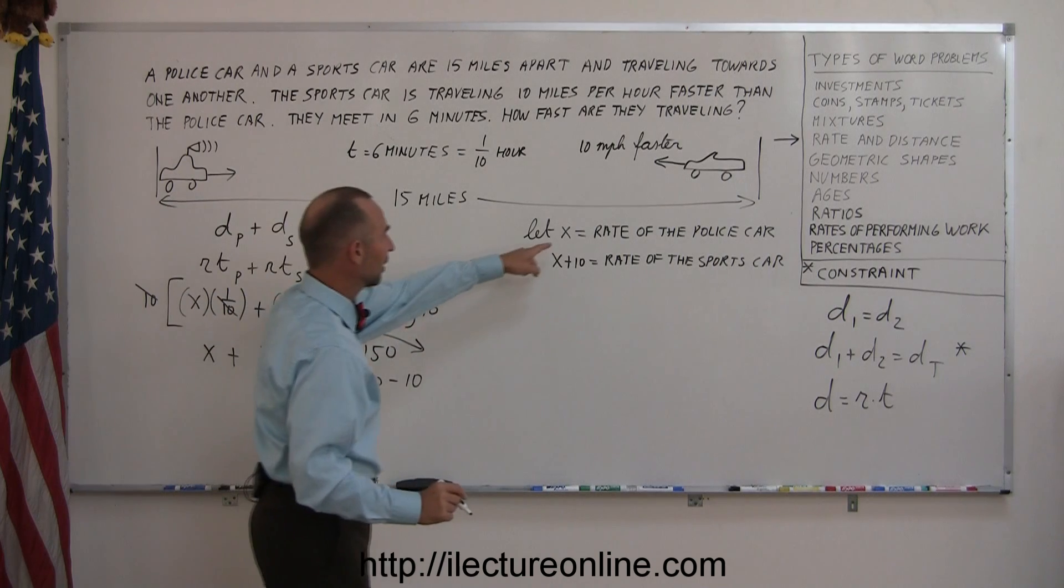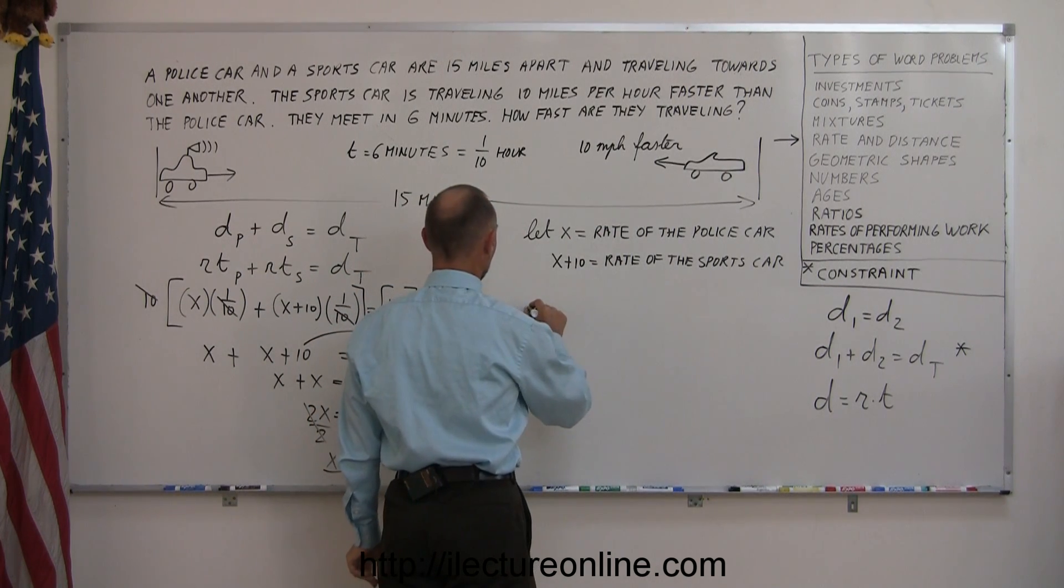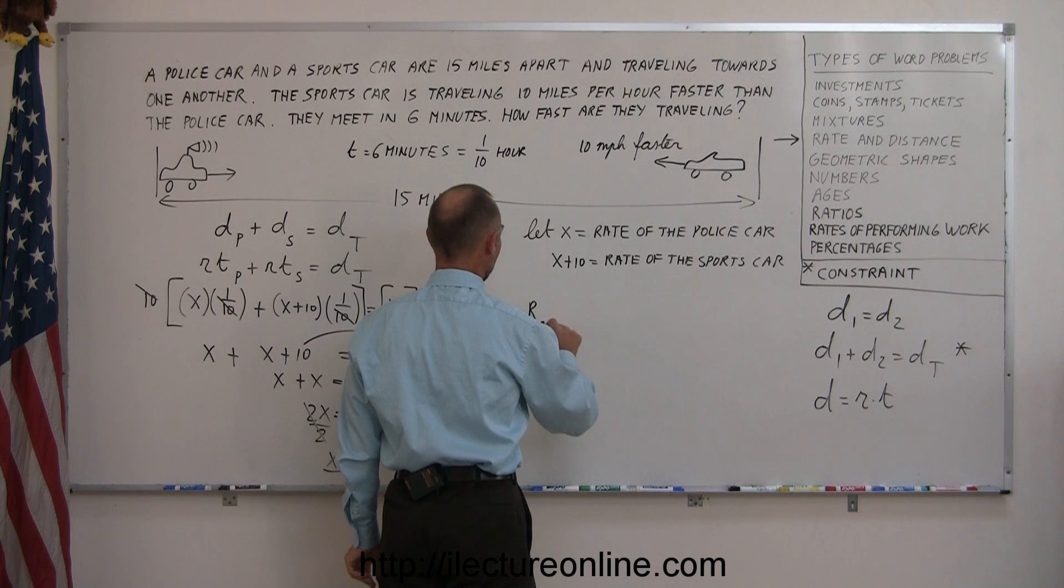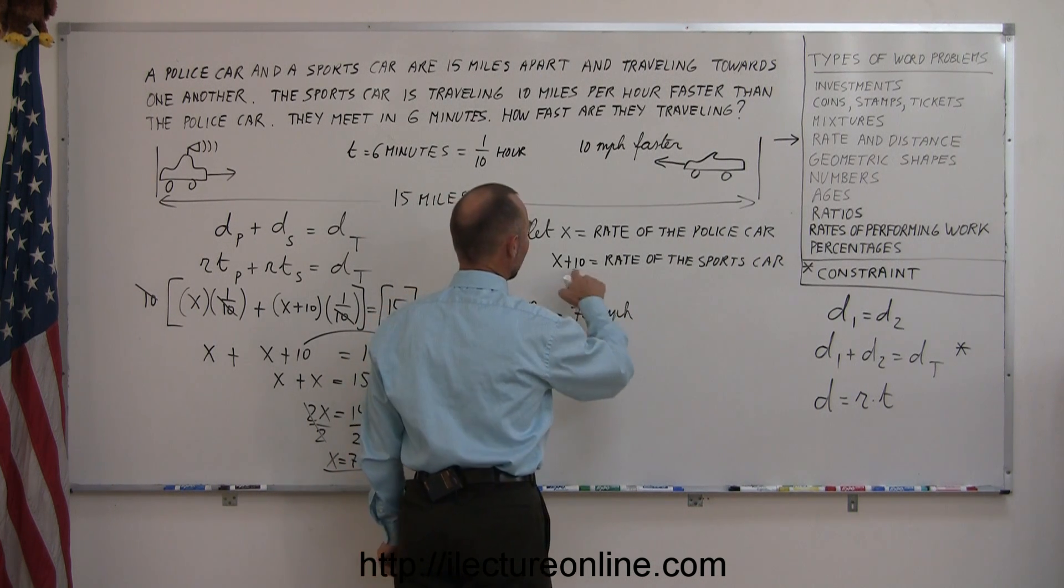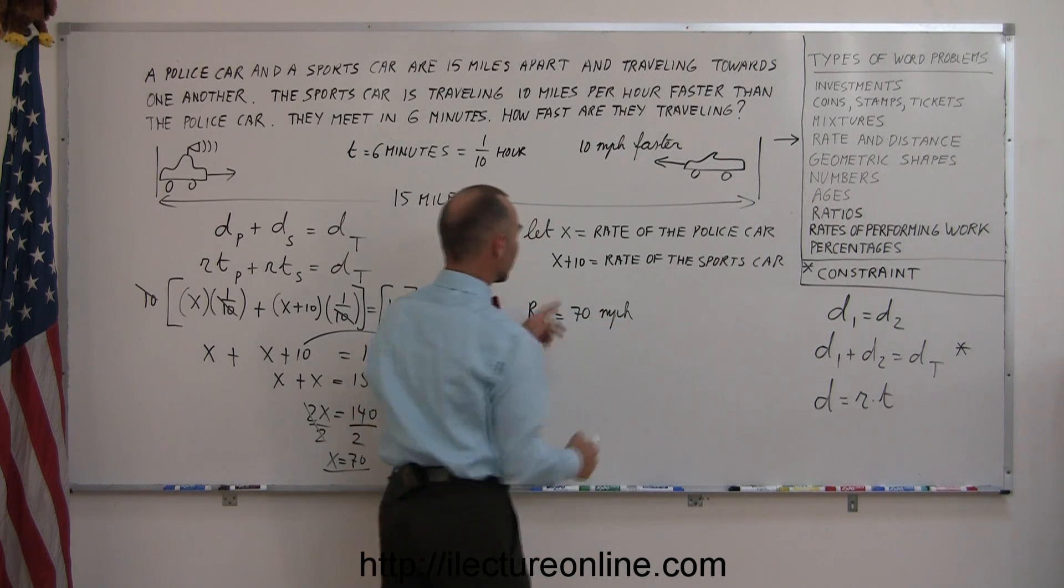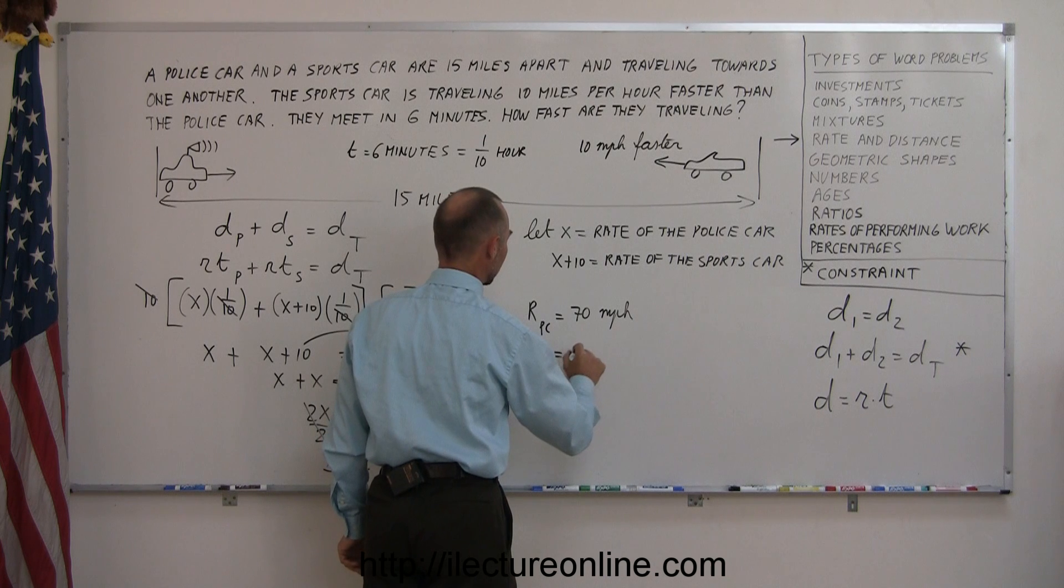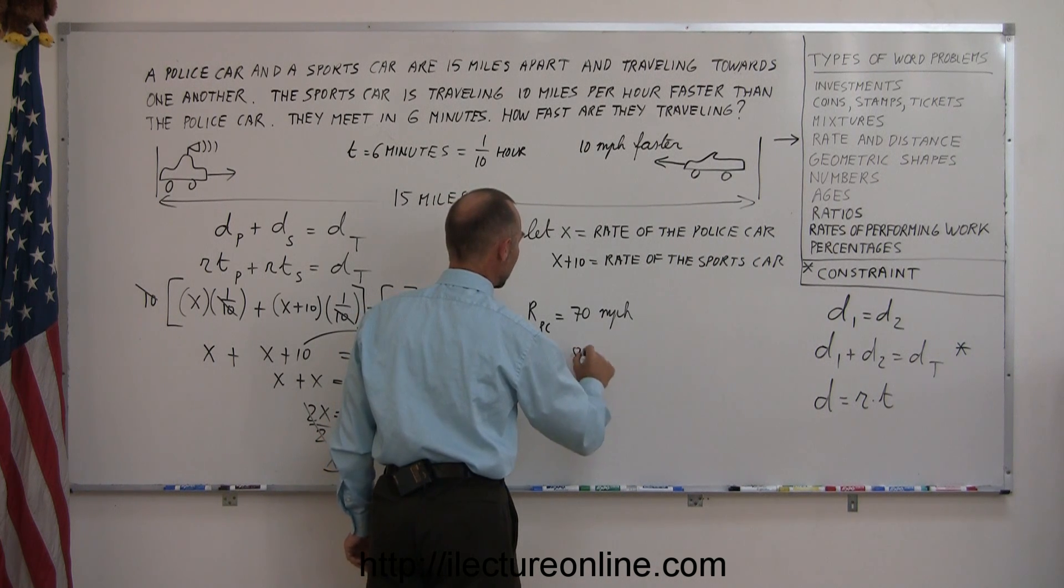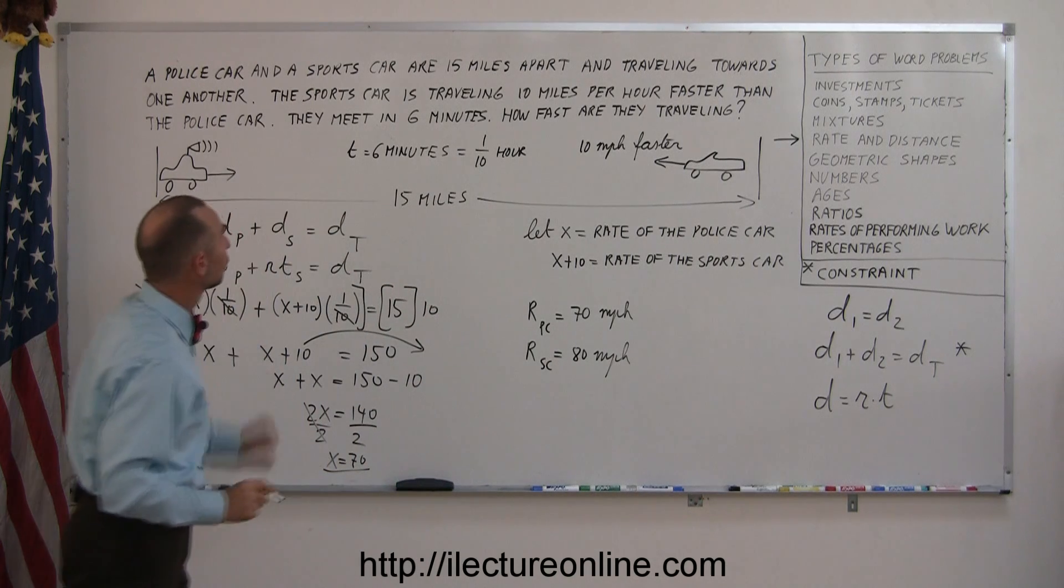Going back to what X represented, since X represented the rate of the police car, that means the police car, the rate of the police car, is equal to 70 miles per hour. And since X plus 10 is the rate of the sports car, 10 more than 70 is 80, so the rate of the sports car is equal to 70 plus 10, which is 80 miles per hour. And there is a solution to my problem.